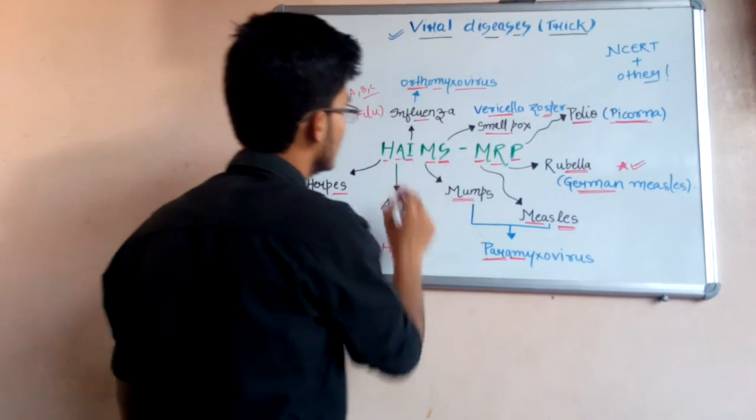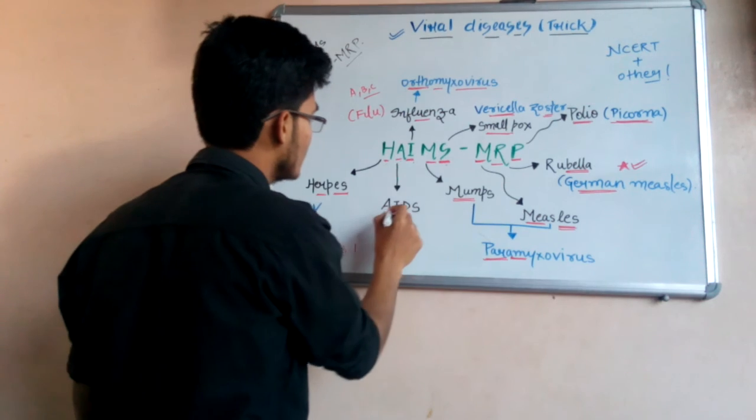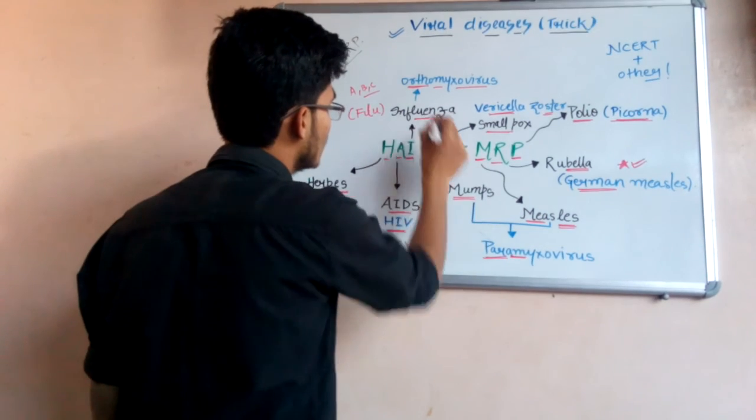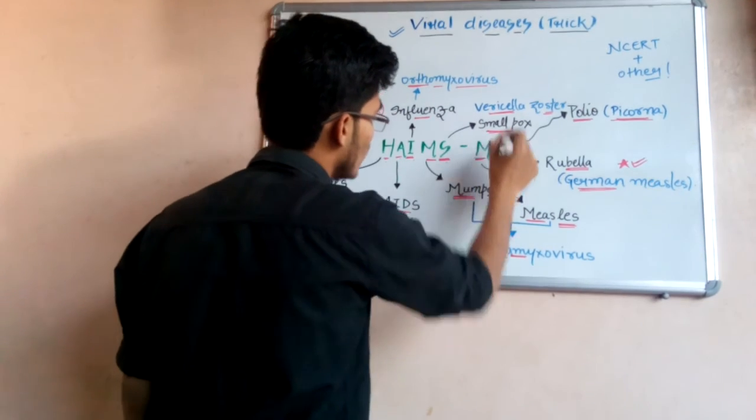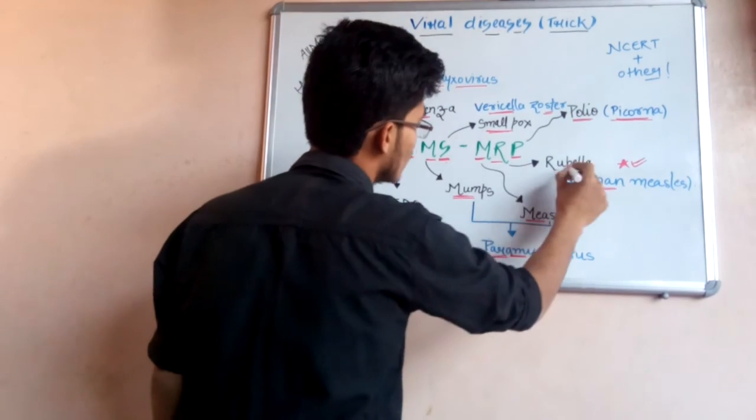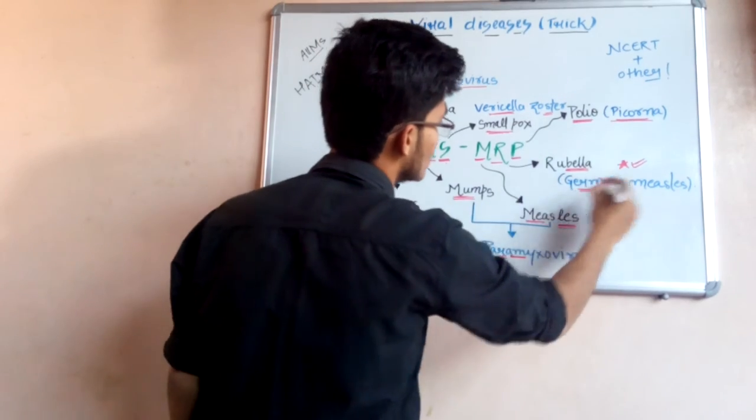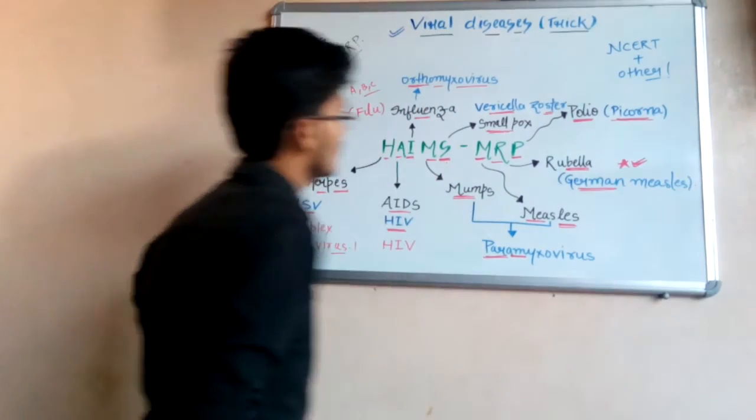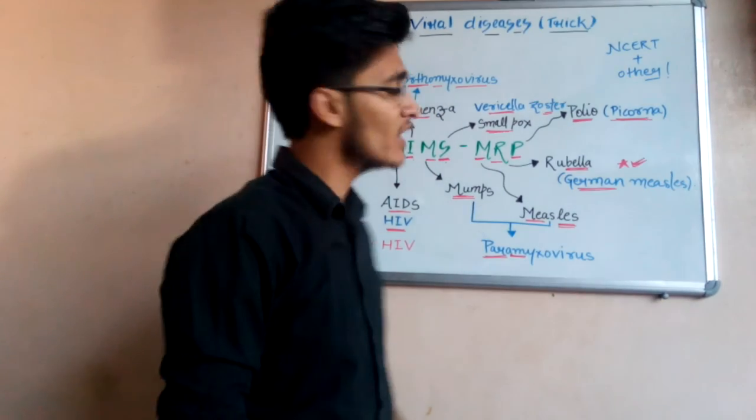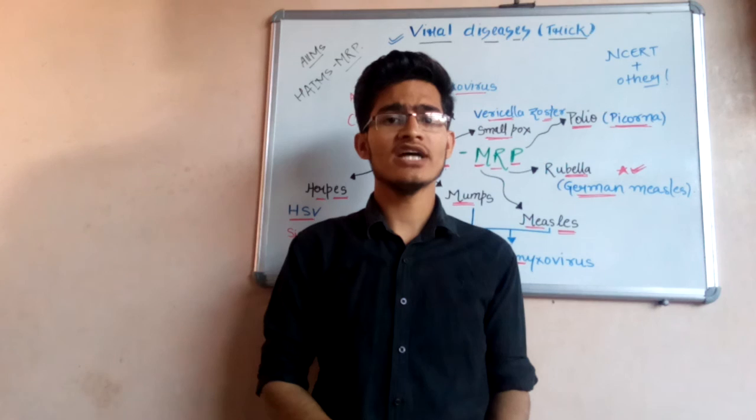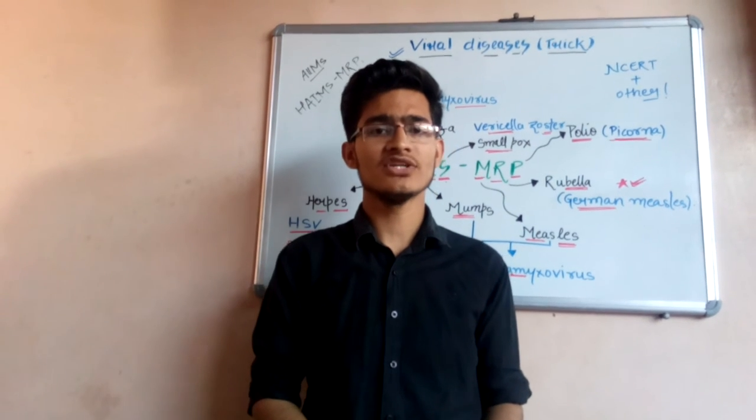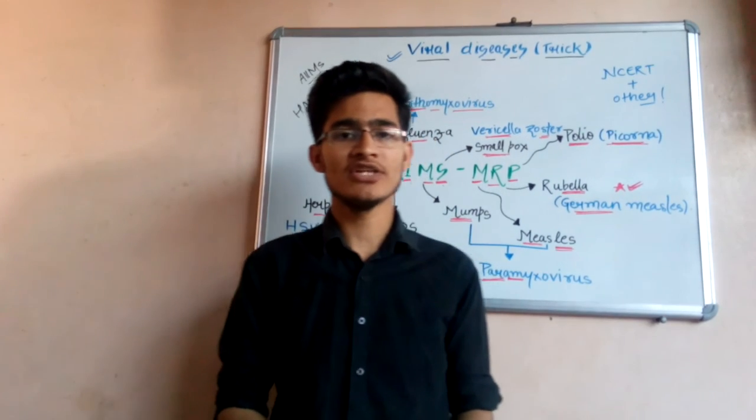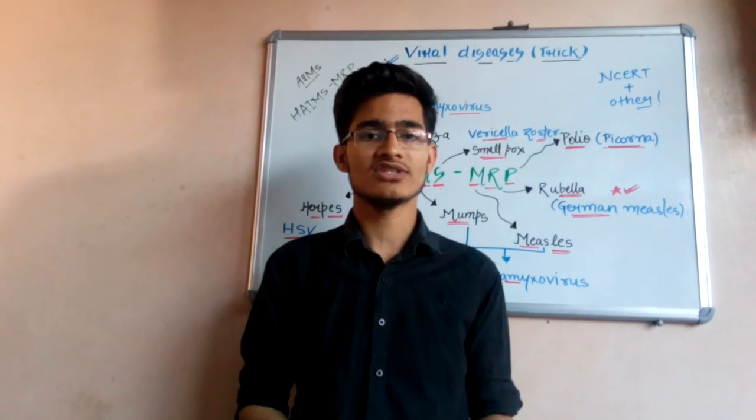AIMS MRP simply means herpes, AIDS, influenza, mumps, smallpox, measles, rubella, and polio. Rubella is also known as German measles. So I hope that you guys like my trick. Thank you so much for watching this video. If you really like this video, then hit the like button, and if you are new, please subscribe to my channel.